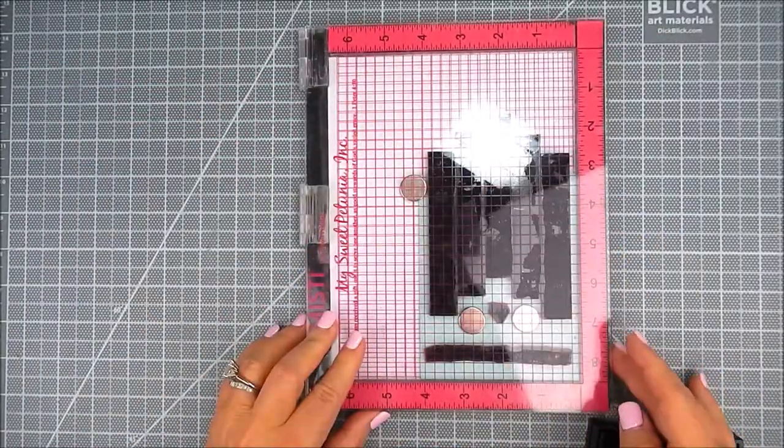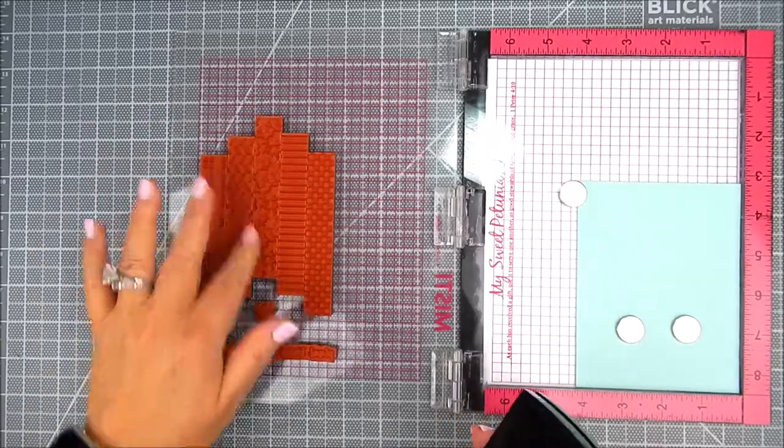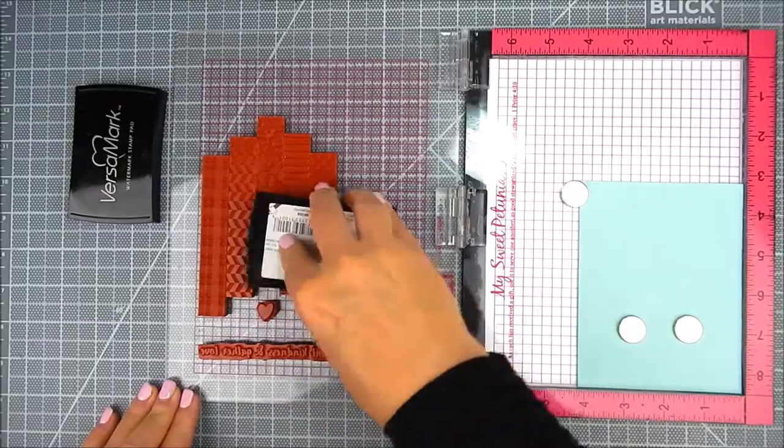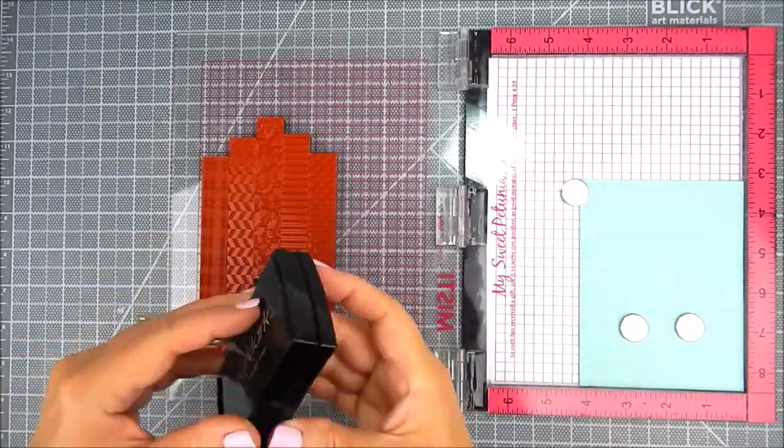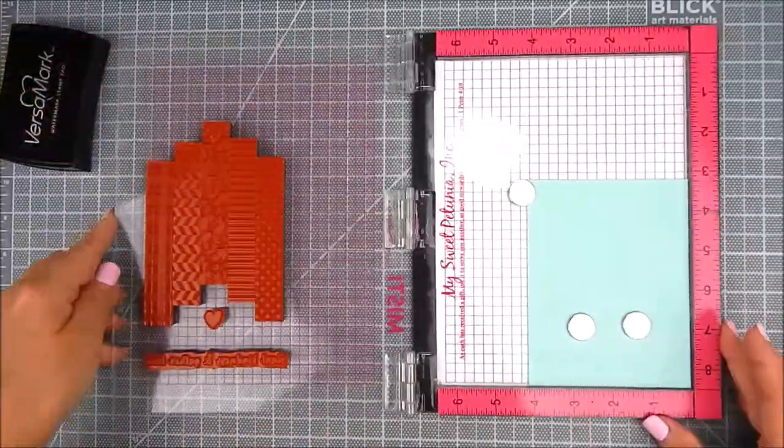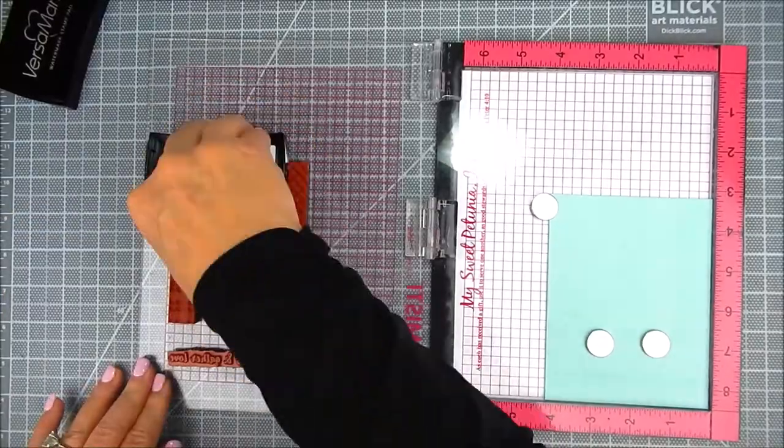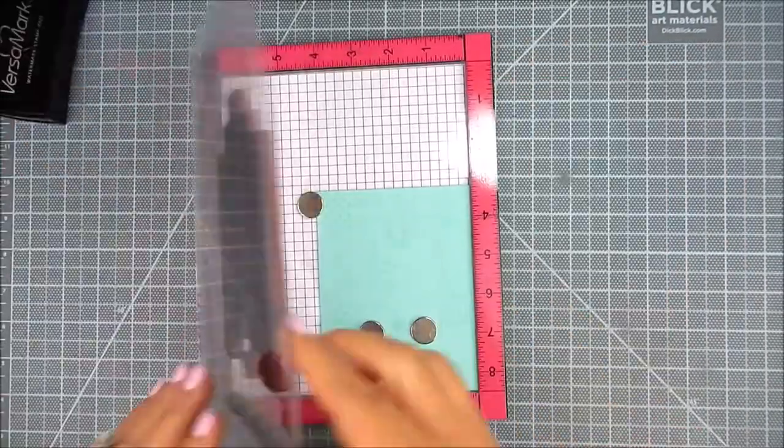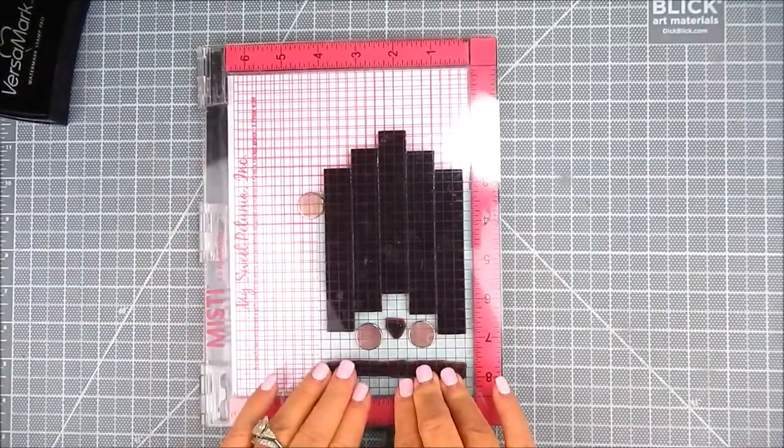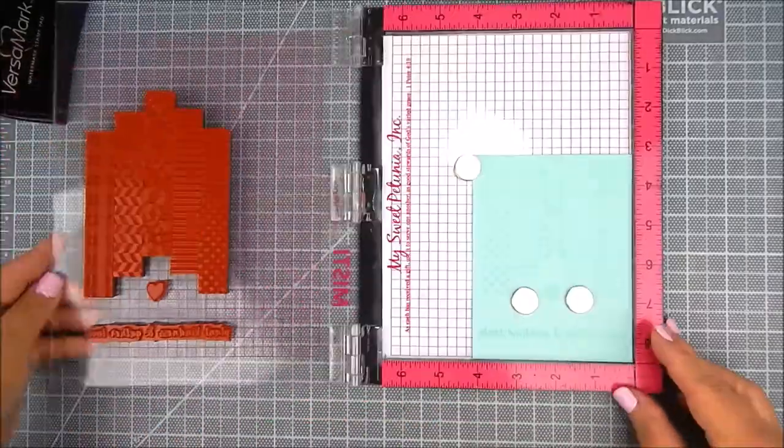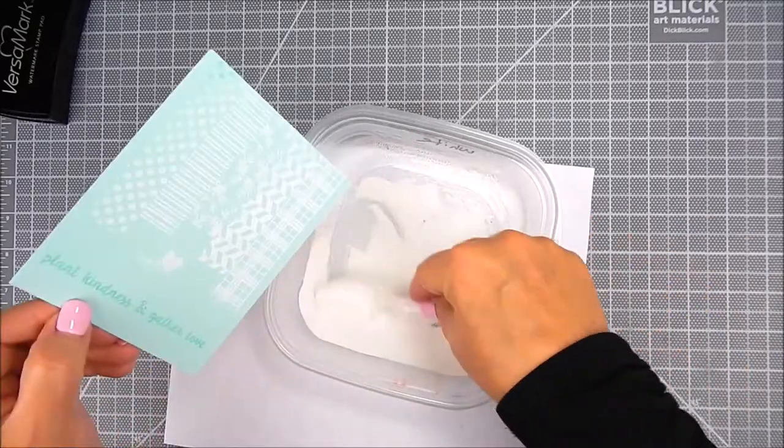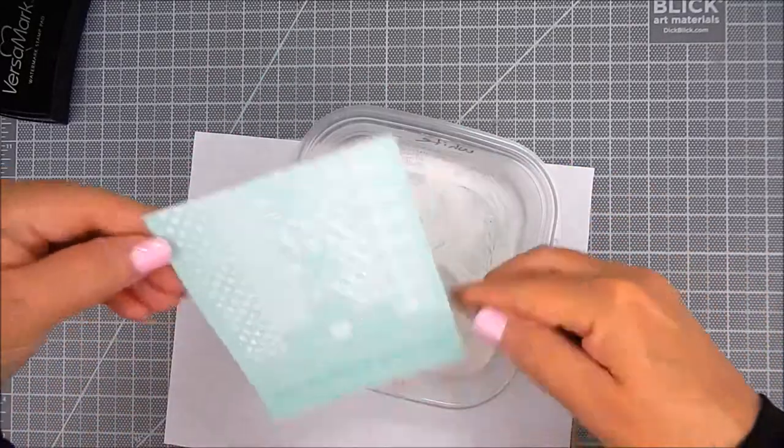I pre-lined up the border stamps one strip at a time to get the pattern I want, and I also added to the MISTI the sentiment and the hearts. I'm stamping them all at the same time with two passes using Versamark watermark ink, and I pushed a little harder this time because I wanted to make sure I got all the nooks and crannies of these strips and get them nicely inked so that I can add some white embossing powder.